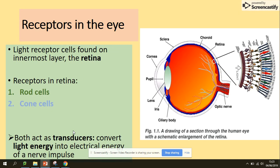In your eye, the light receptors are two types: the rod and cone cells. These light receptor cells are found on the retina and act as transducers. Their job is to convert the light energy into electrical energy of a nerve impulse.